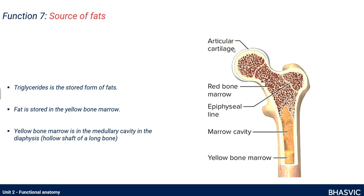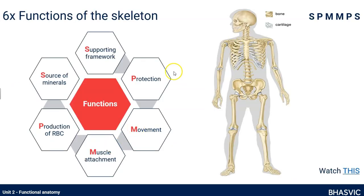As a bonus function — not on the specification but related — the medullary cavity in long bones contains yellow bone marrow, which is essentially a fat store of triglycerides. This can be useful for making energy. Those were the six functions of the skeleton. There is a summary slide and the SPMMPS acronym to help you remember them all.